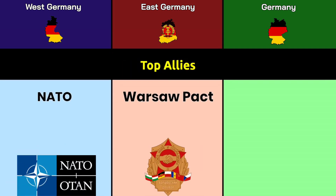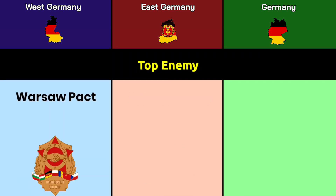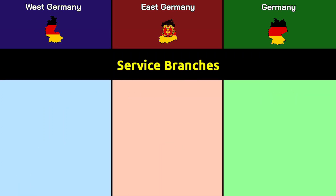Top allies: West Germany allied with NATO, East Germany with the Warsaw Pact, and modern Germany with NATO. Top enemies: West Germany's top enemy was the Warsaw Pact, East Germany's was NATO, and modern Germany's is Russia. Service branches were also compared.